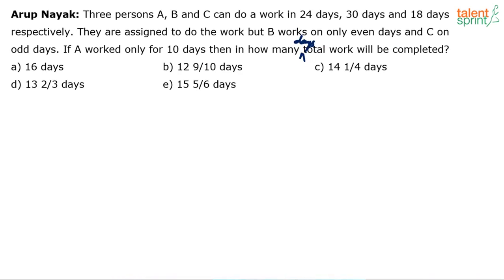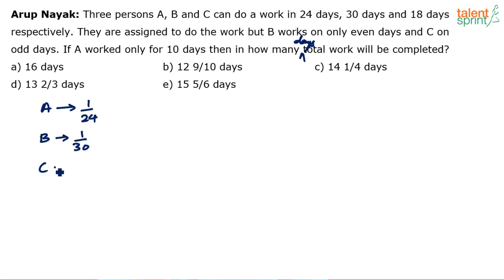Let's see what can be done here. Three persons whose capacities are known: A's capacity is 1/24, B's capacity is 1/30, and C's capacity is 1/18 — the amount of work each can do per day.